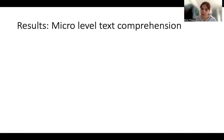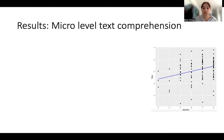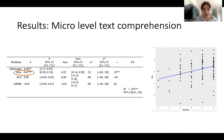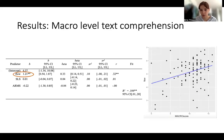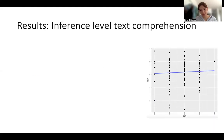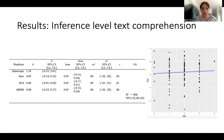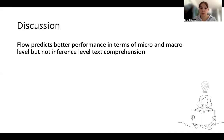Now the results. For micro-level text comprehension, there is a positive association: flow is positively and significantly related to micro-level text comprehension. Interestingly, neither general reader skills as measured by the SLS nor general reading motivation accounted for any of the variance. The same pattern holds for macro-level text comprehension — again a positive association between flow and macro-level comprehension, with no significant association with general reader skill or reading motivation.